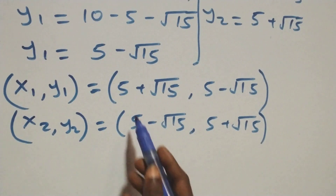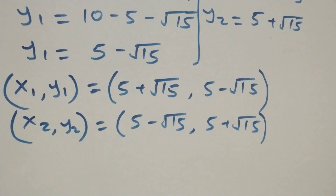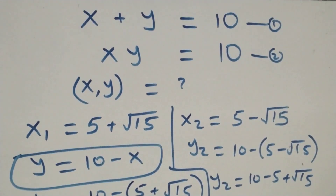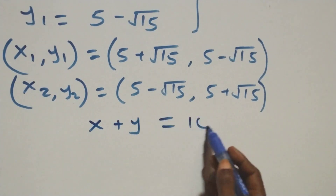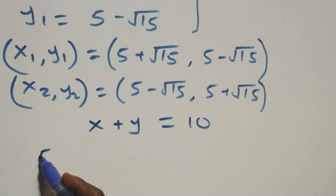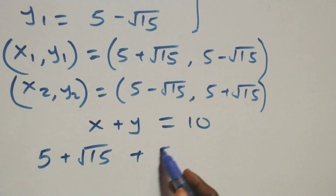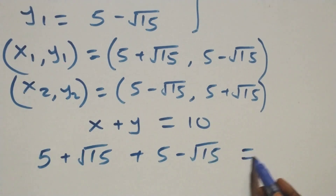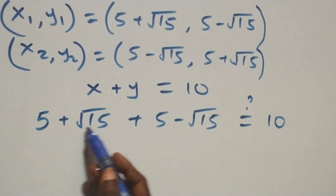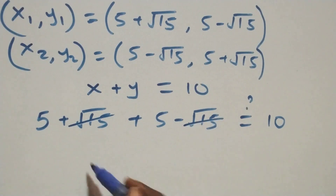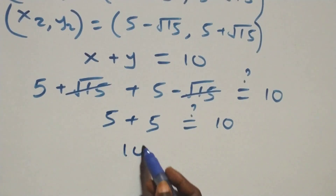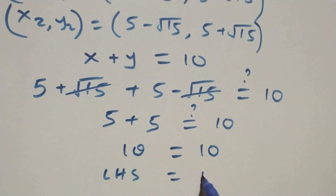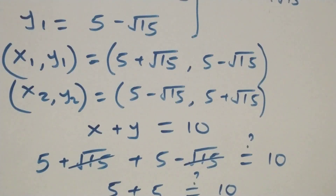Notice that the value of x in the first solution is the value of y in the second, and vice versa. Let's verify by substituting into the original equations. For equation one, (five plus root fifteen) plus (five minus root fifteen) equals ten. Root fifteen and minus root fifteen cancel, leaving five plus five, which equals ten. Left hand side equals right hand side, so both solutions satisfy equation one.